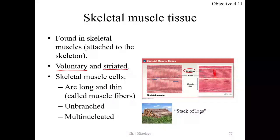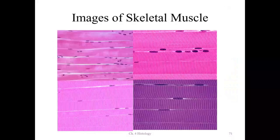Those lines are called striations. Skeletal muscle cells are long, thin, and unbranched with striations. Each cell will contain more than one nucleus — they are multinucleated. They look like stacks of walls when observed.